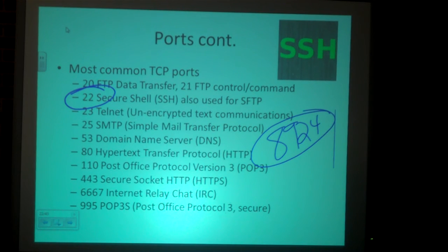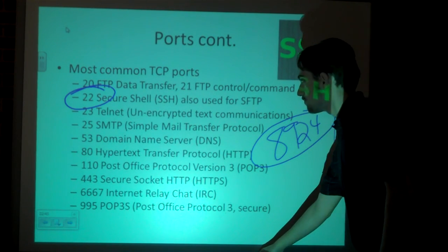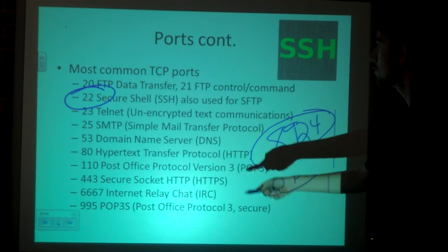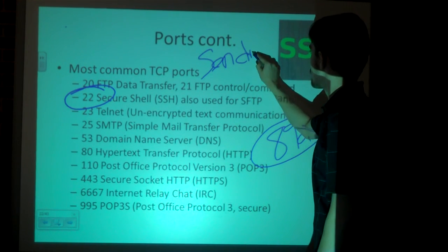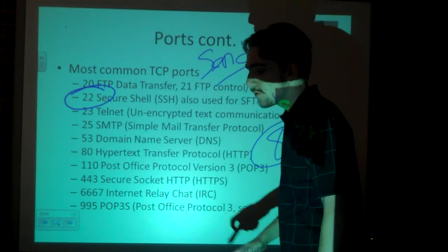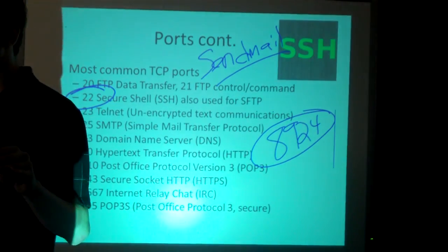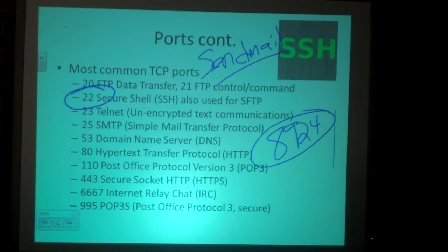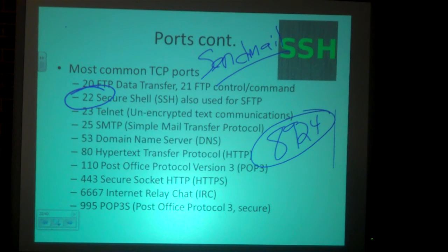SMTP is sending mail outbound. SendMail is really popular on Linux. If you go in Gmail and click 'view original,' you can see the IP address the message was sent from. If you're using your own server on your own internet, it's going to show your IP address. So it's not a good idea to spam from your own server — they'll get your IP and it'll be blacklisted or reported.